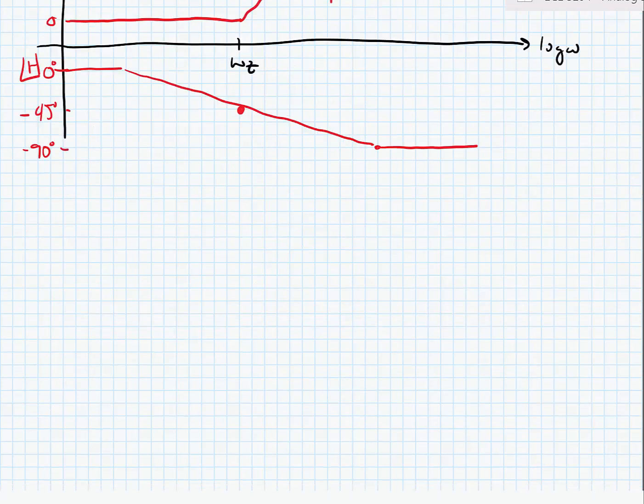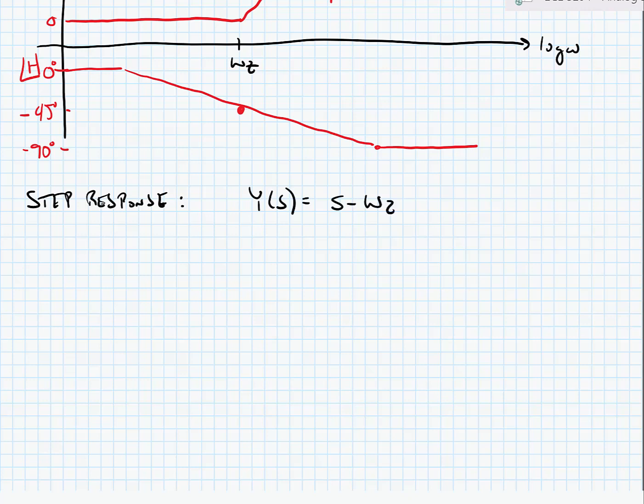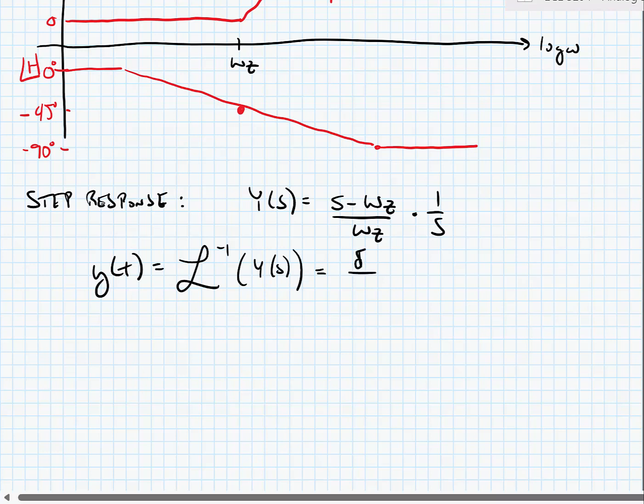Let's now look at the step response. So here we have Y(s) equals s minus omega z, I'm actually going to normalize this times 1 over s. And we find Y(t) equals the inverse Laplace transform of Y(s). This is equal to 1 over, I should say, delta of t over omega z minus H(t).